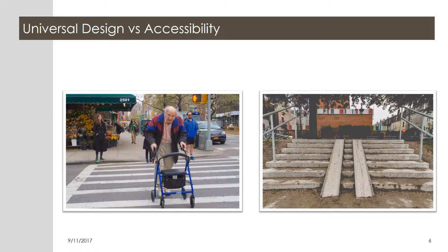Let's take a quick look at the difference between universal design and accessibility. Which photo shows UDL, and which shows accessibility through accommodation? In the first photo we see an elderly gentleman crossing the street using a walker. If you look behind him you can see that there are sidewalk cuts that allow him to push this walker smoothly from the sidewalk to the street and back to the sidewalk. These cuts also accommodate strollers, bikes, skateboards, and those wheeled briefcases that all of us are dragging behind us. The sidewalks were designed intentionally to accommodate all users.